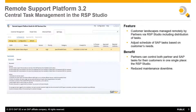Another key feature with Remote Support Platform 3.2 is that partners can now use the Remote Support Platform Studio to develop support tasks, deliver tasks to customers, and manage tasks for different customer installations. In RSP Studio 3.2, partners are now able to manage customer landscapes remotely, including the distribution of tasks, and can also adjust the schedule of SAP tasks based on customer needs. These features were formerly available through the RSP Remote Console application, which will soon be retired. Now partners can control both partner and SAP tasks for their customers in one single place — the Remote Support Platform Studio — and ultimately reduce maintenance downtime.